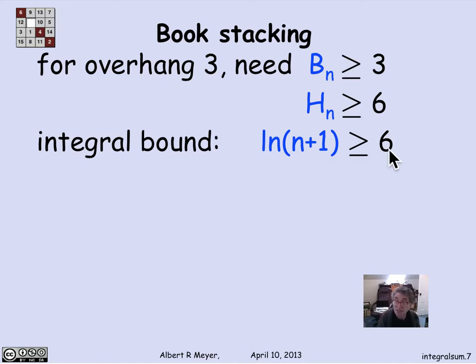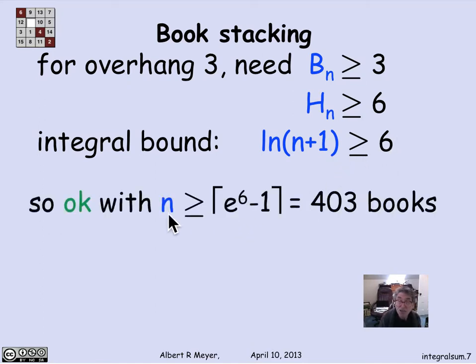Well, exponentiating both sides, the right-hand side becomes e to the sixth. And I figure out that as long as n is greater than or equal to e to the sixth minus 1 books, rounded up, of course, because you can't have fractions of a book, you get an estimate that with 403 books, I can actually get my stack to stick out three book lengths past the edge of the table.